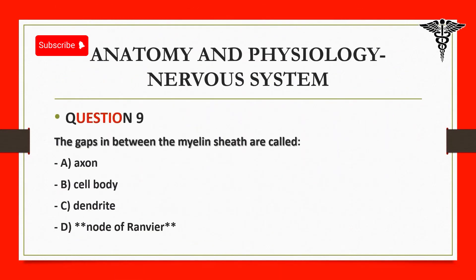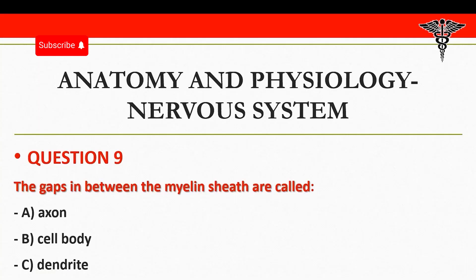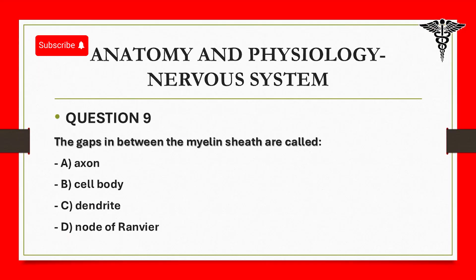Question 9: The gaps in between the myelin sheath are called: A. Axon. B. Cell body. C. Dendrite. D. Node of Ranvier.